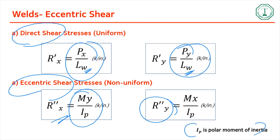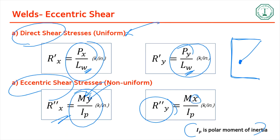The direct shear stresses rx-prime and ry-prime act uniformly at every part of the weld. But the eccentric shear depends upon how far the point is from the centroid. So you'll have to find the critical point of the weld — the point that has the highest ultimate stress — based on the values of x and y distance from the centroid.